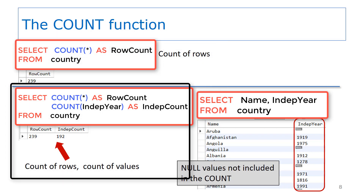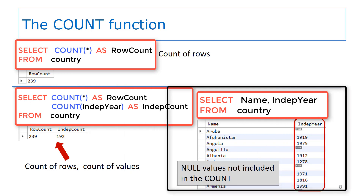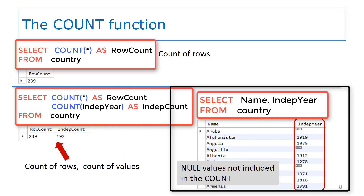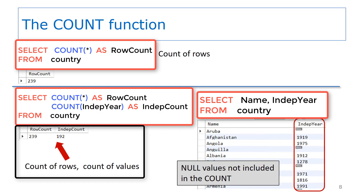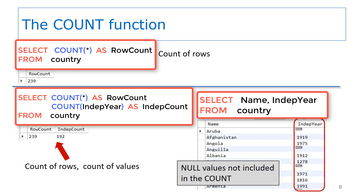In the bottom left figure, you can see another usage of COUNT. In this SELECT, there are two COUNT functions: one to get the count of rows in the result set, and the other to get the count of independence year values using the column name INDEP_YEAR. Notice the difference in the counts — the row count is 239, but the INDEP_YEAR count is 192. On the lower right, you can see an example of what is included in the country table. Several of the INDEP_YEAR columns have a null value. When a column name is specified in the COUNT function, the count is only for columns that have a non-null value. That is why the INDEP_YEAR count is 192 and the row count is 239 — there are over 40 countries in the table that have a null value for the independence year.